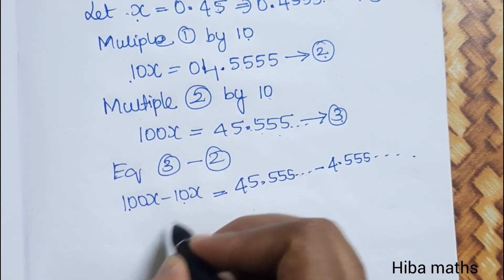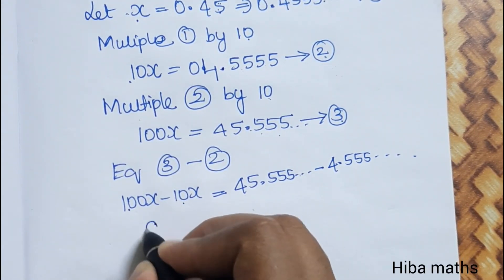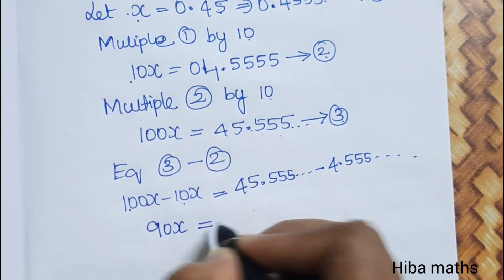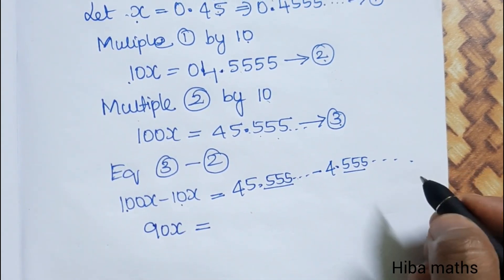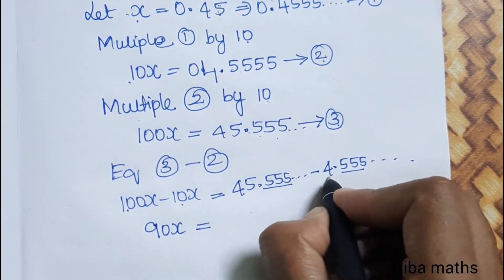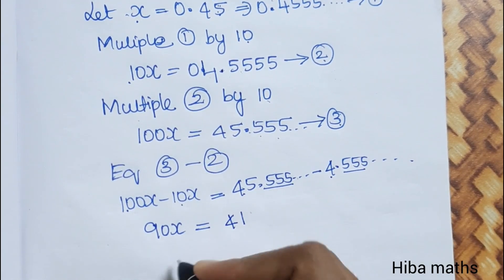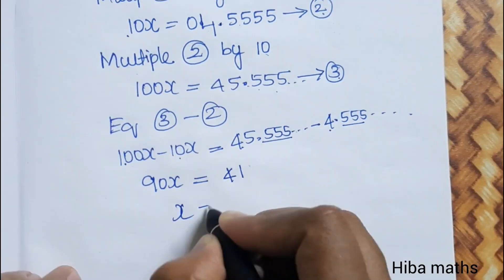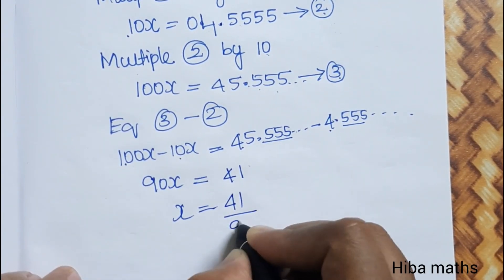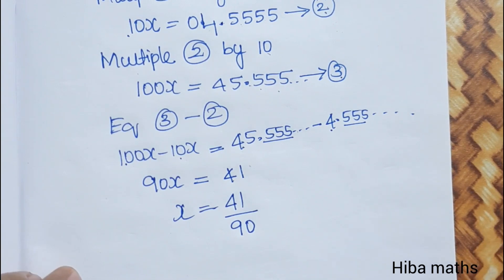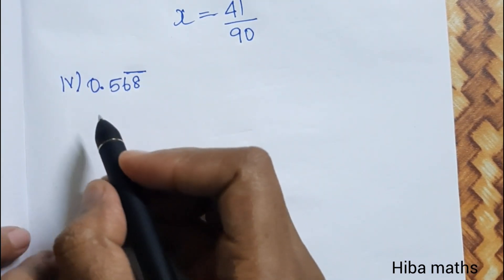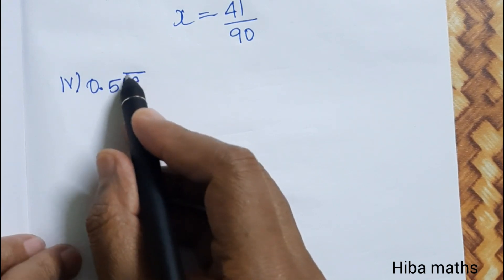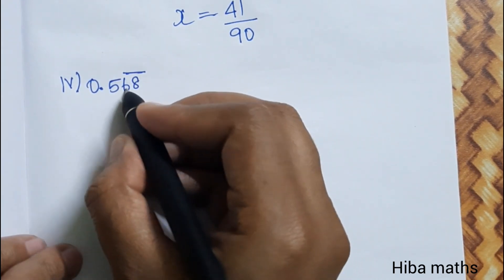100 minus 10 is 90x, and the right side is 45 minus 4, which equals 41. Therefore x equals 41 by 90. That is the answer. Now the 4th question: 0.568 repeating.